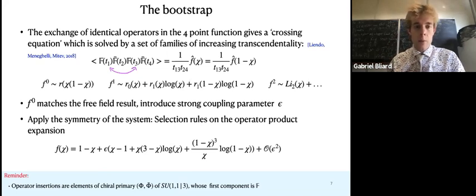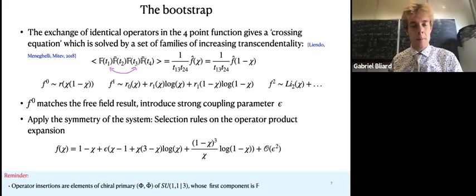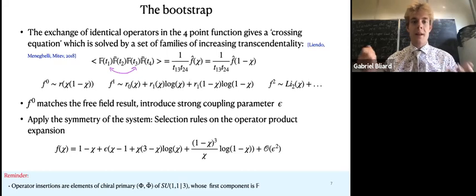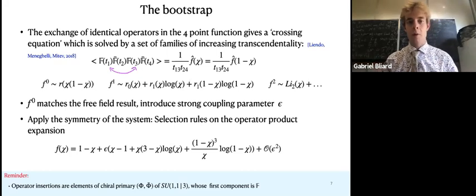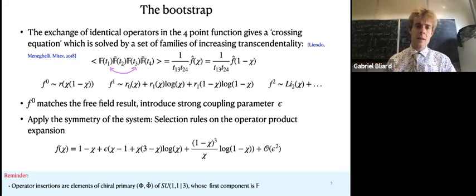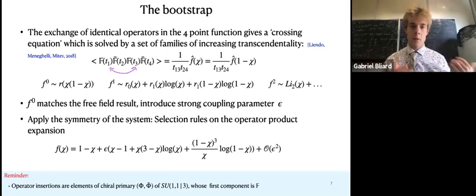And then we have the crossing symmetry. So it means that under the exchange of two identical operators, we get the same function. In the language of CFT and bootstrap, if we have the operator product expansion, when we bring the second operator close to the first one or close to the third one, we get the same function. And the interesting thing in one dimension, which was solved by Pedro Liendo, Carlo Meneghelli, and Mitev a few years ago, was that you can solve the crossing equation with a set of families of increasing transcendentality.